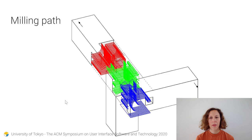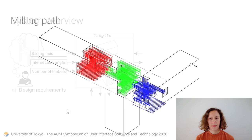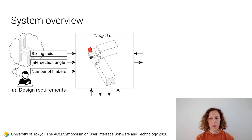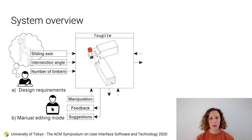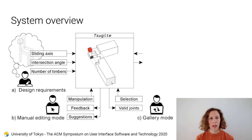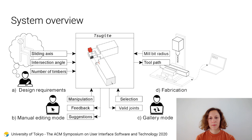Finally, when a design is finished, you can press a button to instantly generate a toolpath for fabrication with the CNC milling machine. In summary, the user sets certain design requirements including sliding axes and angle of intersection, then edits the joint manually by pushing and pulling on faces while receiving real-time feedback and suggestions — or alternatively selects a joint in the gallery mode — and finally exports the joint for fabrication.